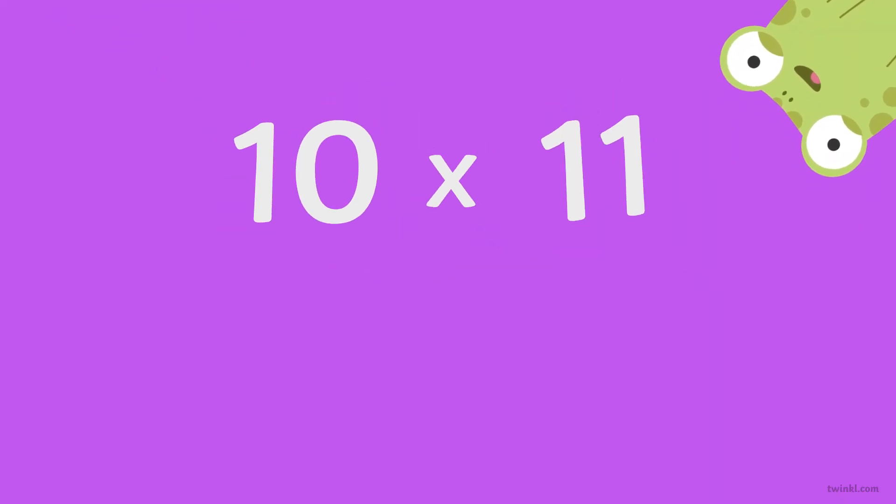Ten times ten is one hundred. Ten times eleven is a hundred and ten. Ten times twelve is a hundred and twenty.